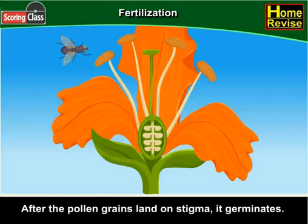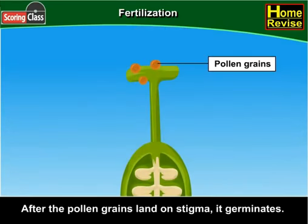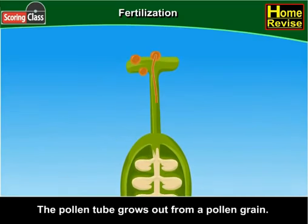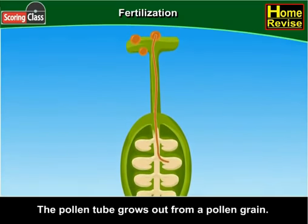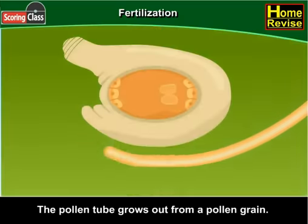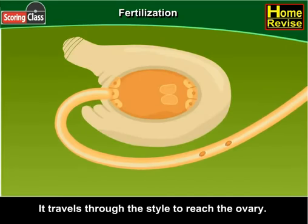After the pollen grains land on the stigma, it germinates. The pollen tube grows out from a pollen grain and travels through the style to reach the ovary.